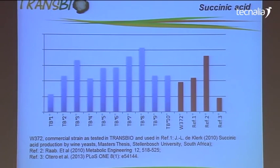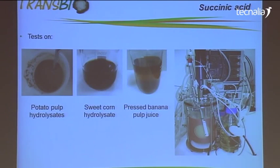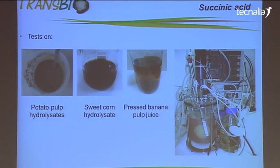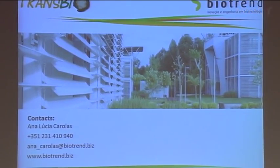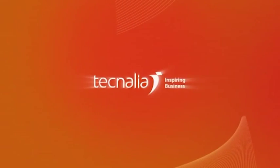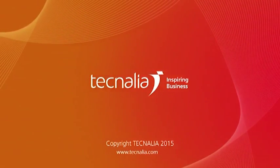These are some good results. So just to finish — in the scope of the project, we want to valorize byproducts of the fruit and vegetable transformation industry. We have tested potato pulp hydrolysates, sweet corn hydrolysates, and pressed banana pulp juice supplied by several project partners, and we managed to get some significant results with the potato pulp hydrolysates. Thank you very much.